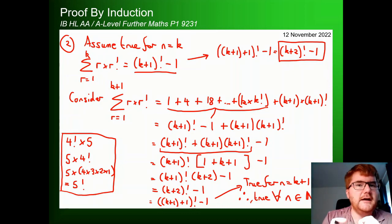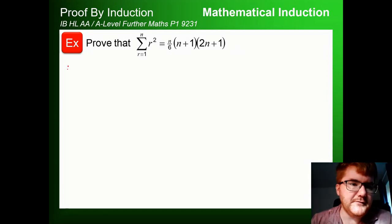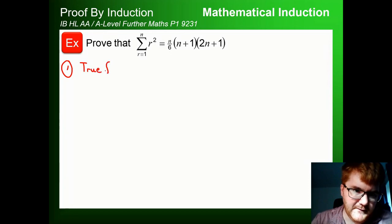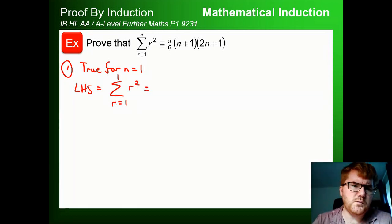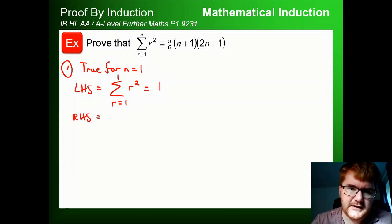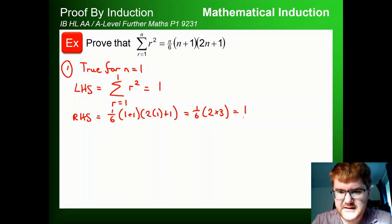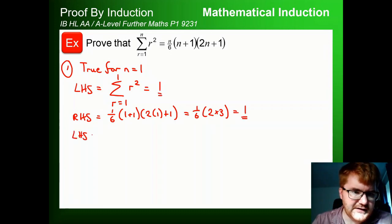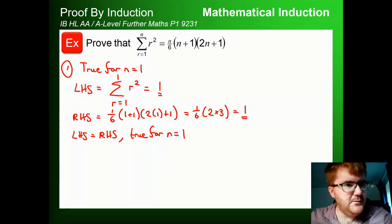On to example 3. We want to prove that the sum from r=1 to n of r² equals ⅙n(n+1)(2n+1). Again, we go through two steps. For n=1, the left-hand side is 1²=1. The right-hand side is ⅙ × 1 × 2 × 3 = ⅙ × 6 = 1. The left-hand side equals the right-hand side, so it is true for n=1.